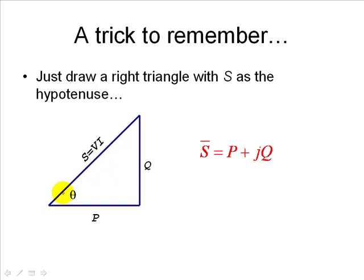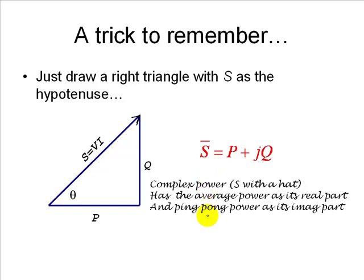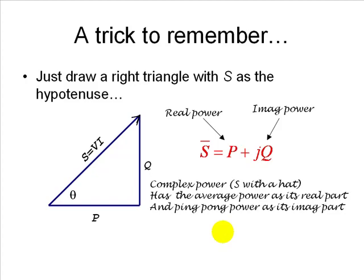We can also represent power as a complex number — complex power S-hat — where the real part is P (active power) and the imaginary part is Q (reactive power). This does not mean Q is imaginary in the physical sense; it represents a very real energy ping-ponging between generators and the load. In the complex representation, Q plays the role of the imaginary part. The names active power and reactive power are more meaningful than real and imaginary power.